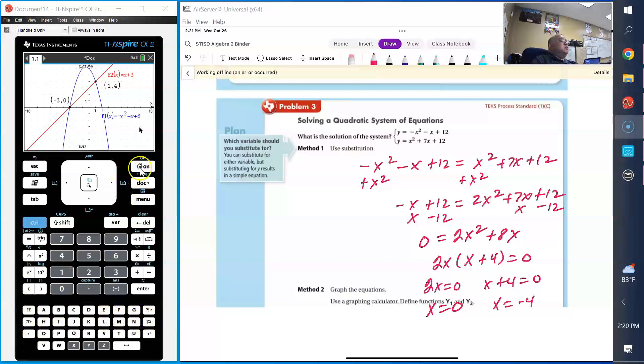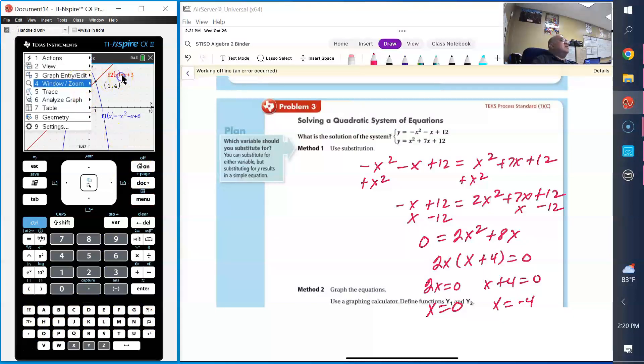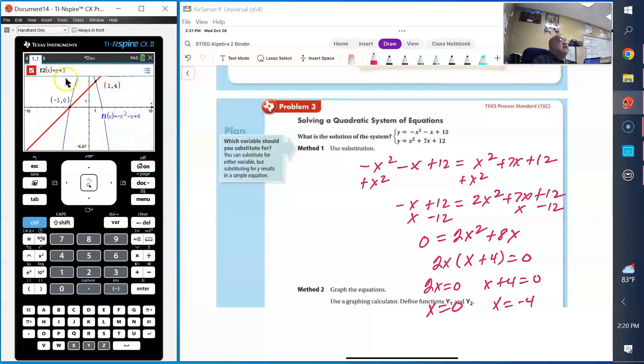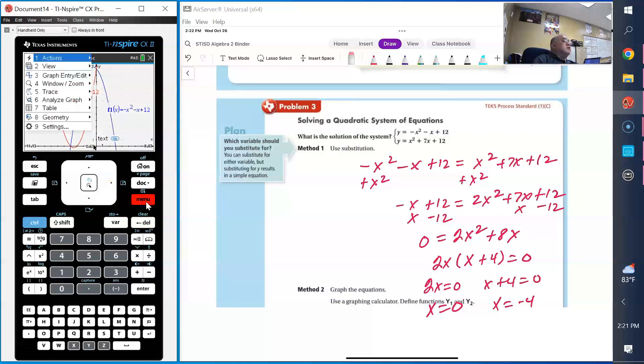Now let's do this graphically to find those points. Go to menu and enter x squared plus 7x plus 12. Then enter the other equation, negative x squared minus x plus 12. You notice there's two intersections. Go to menu, analyze graph, find the intersection. There's the first one at 0 comma 12. The other intersection is negative 4 comma 0.